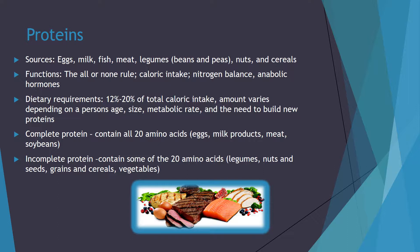An incomplete protein contains less than 20 amino acids. Examples of this are beans, nuts and seeds, grains, cereals, and vegetables.